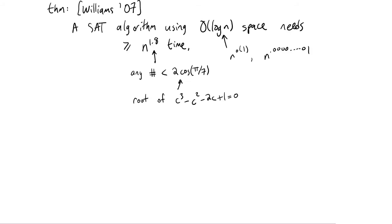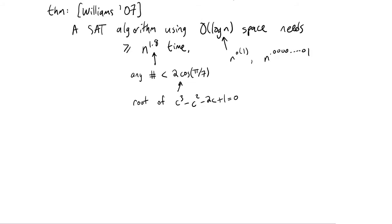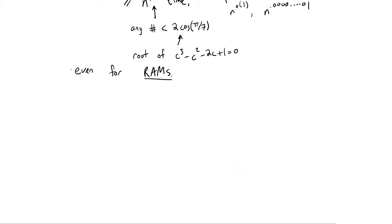The last comment about this theorem is that it holds even in the computational model of RAMs — random access Turing machines. Normally we've defined Turing machines with multi-tape models, but this lower bound says that even in a RAM, a random access machine, if you use n to the little-o of one space to try to solve SAT, then you're going to need at least n to the 1.8 time.